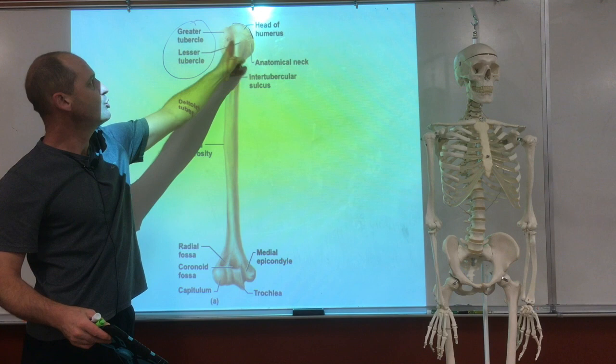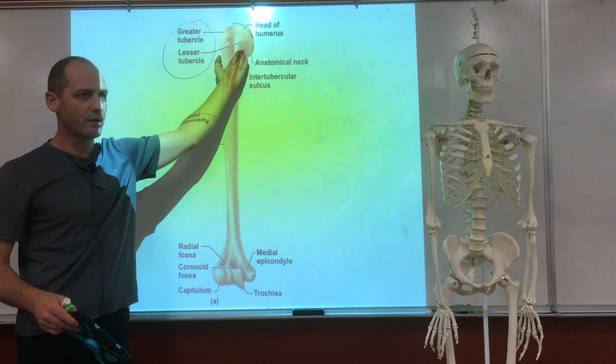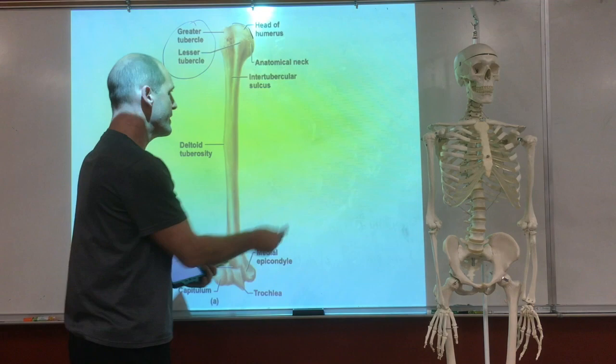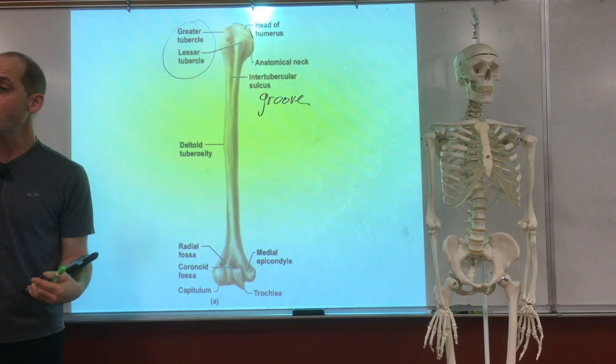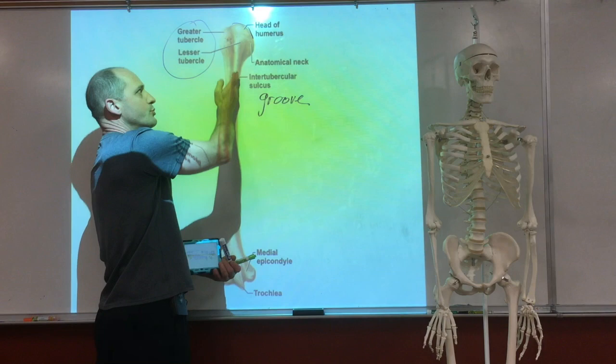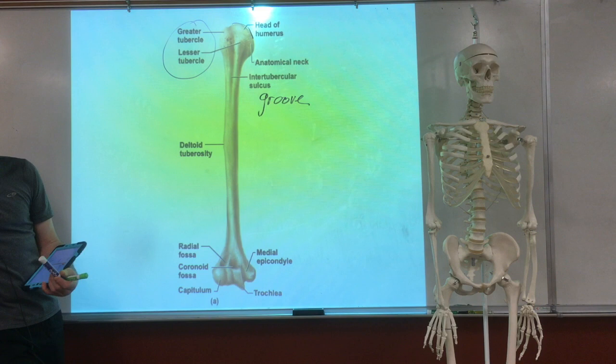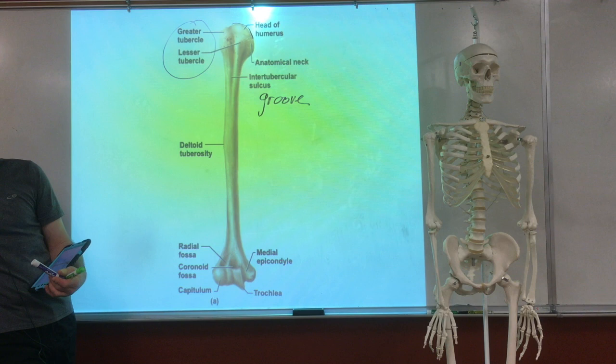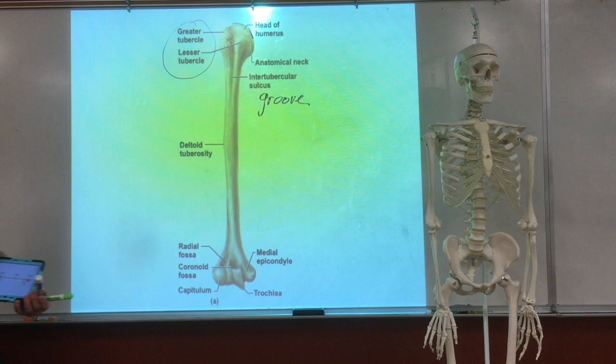In between those two bumps you have a groove that goes up and down — a shallow depression. They call that the intertubercular sulcus, or also the intertubercular groove. That's where the biceps brachii goes through as it goes into the shoulder. The tendon goes through here. When I first came to America and did massage school, this lady said 'this is the bicipital groove' and I thought 'groove? That's music!' I was new to the country.